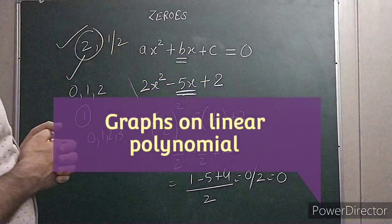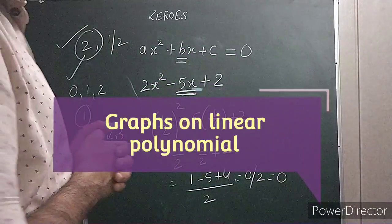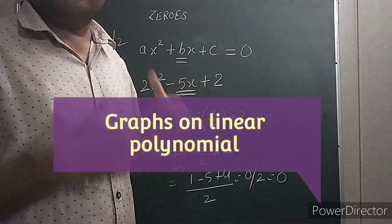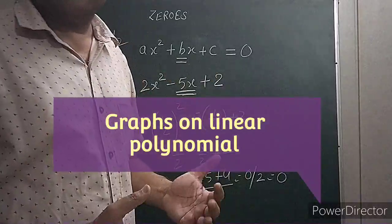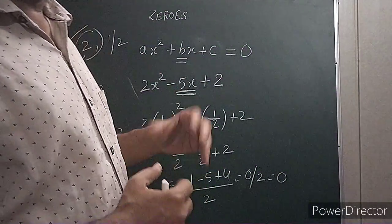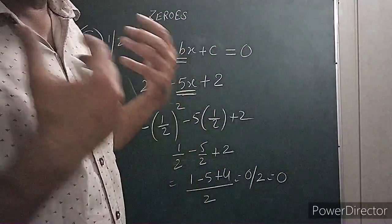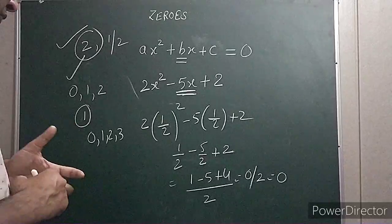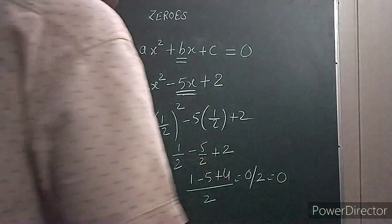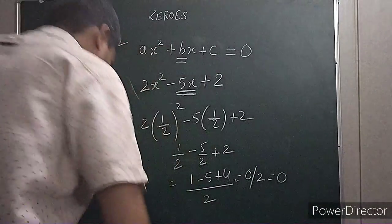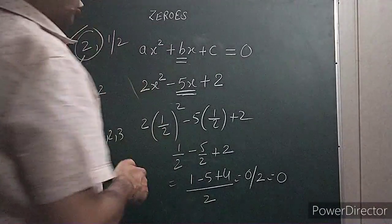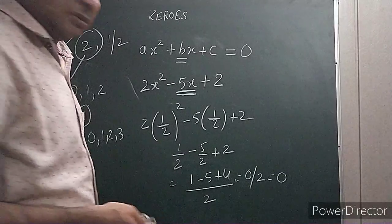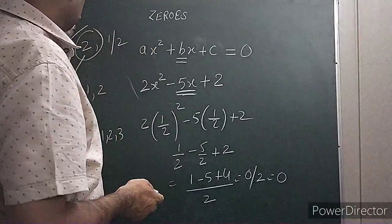Now we will see how to find out the zeros of the polynomial with the help of the graph — the geometrical method of finding out the zeros of the polynomial. Let's start with the linear polynomial first, just to understand the concept.